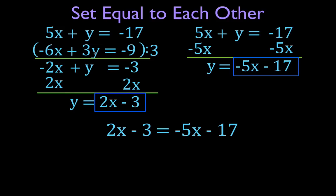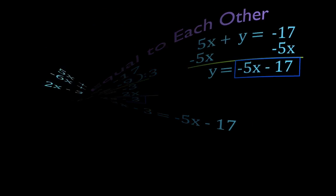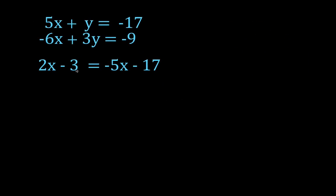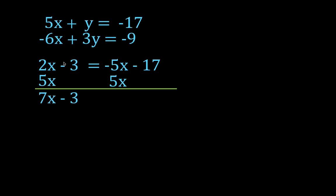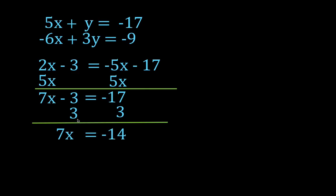I'm going to bring this equation and my 2 original equations onto the next slide and solve for x. I've eliminated the y — I have just x, one equation, one variable. I like to move all x terms to the left-hand side and all constants to the right. I'm going to add 5x to both sides: I get 7x minus 3 on the left, and minus 5 plus 5 goes to 0, equals minus 17. Now I add 3 to both sides: the minus 3 and 3 go to 0, leaving 7x equals minus 14, because minus 17 plus 3 is minus 14.